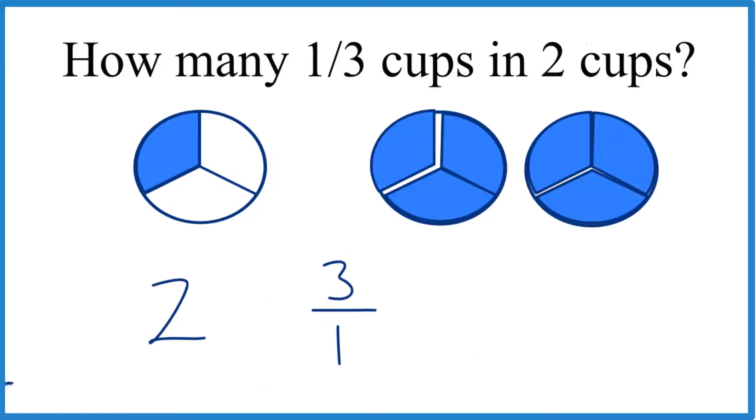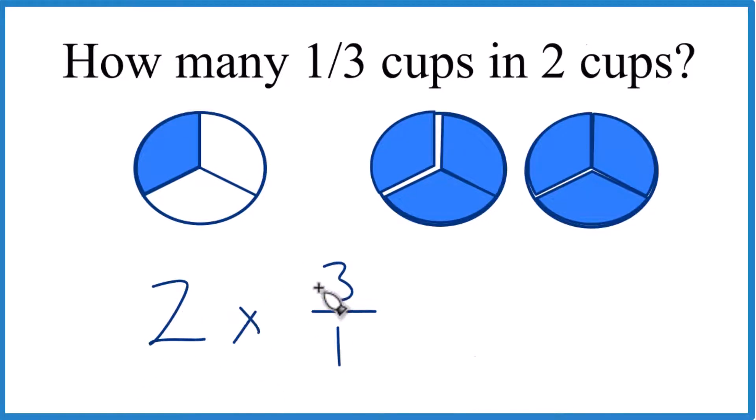Because if we take the reciprocal, then we can just multiply. So two times three equals six, and we just keep the one across here the same, because this is really just two over one. So one times one.